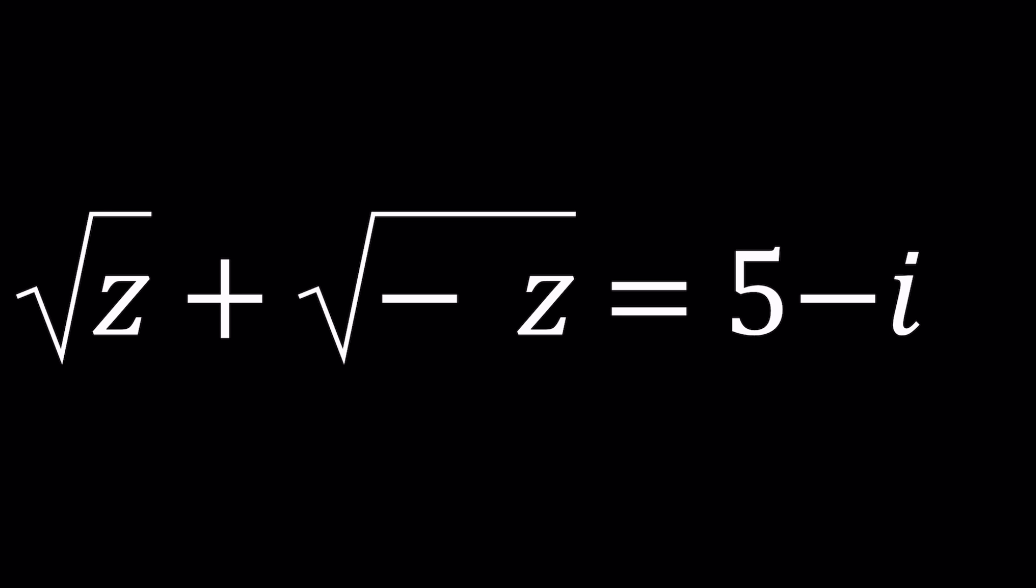So we have the square root of z, and z is a complex number, plus the square root of the opposite of z, and they are up to 5 minus i, which is another complex number. So it makes sense, right? When you add two complex numbers, you get 5 minus i, unless you're adding two complex conjugates, which will give you a real number. But since these are not conjugates, or are they, how do we get 5 minus i from here?